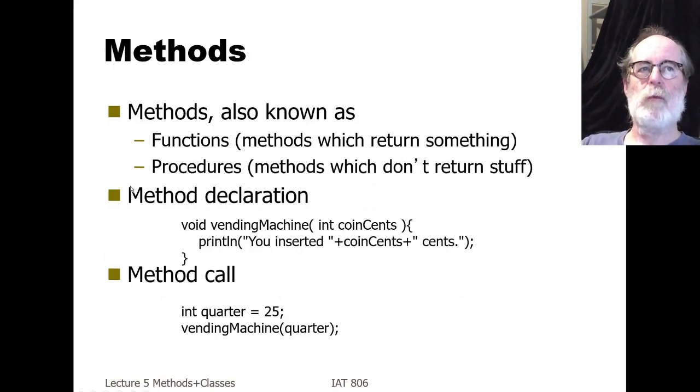Now, let's move on to methods. So once again, methods are also known as functions. That is to say, those are methods that return something, like sine and cosine return something. Or procedures, methods that do things, but don't return a value to the piece of code that called it. And here is a classic method definition. This is some method I'm just making up out of thin air, void vending machine int coinsense. It takes a single parameter. And all it does is what can be called a side effect. It does print line, you inserted coinsense sense. Something very simple.